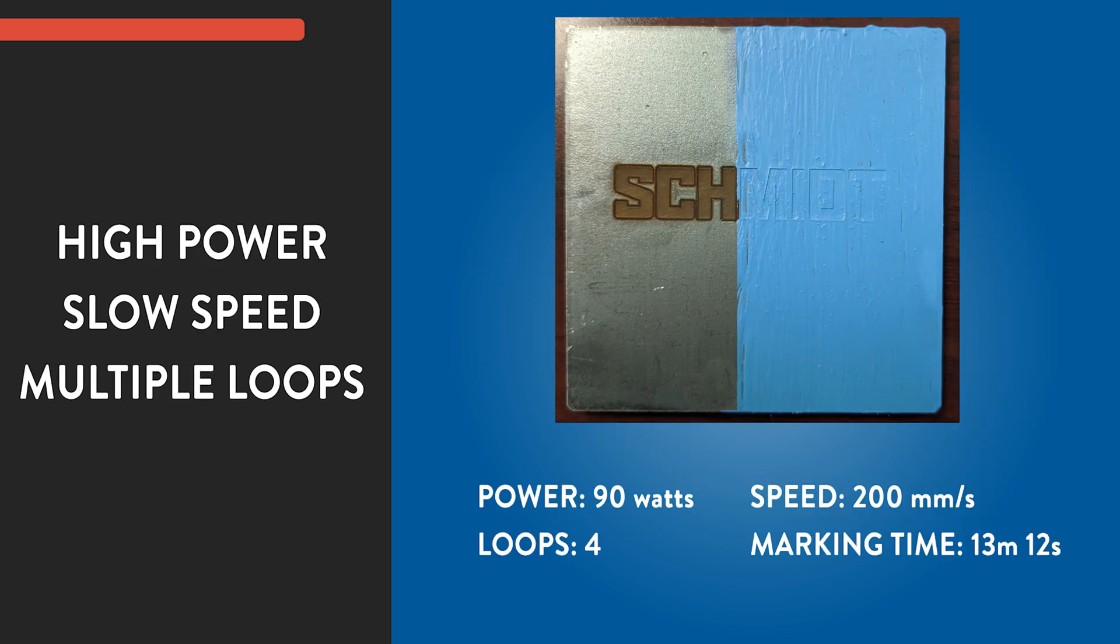Here's an additional mark that combines high power, slow speed, and multiple loops to get even more depth. What this shows us is that sometimes changing just one setting isn't enough to get the depth that you need.